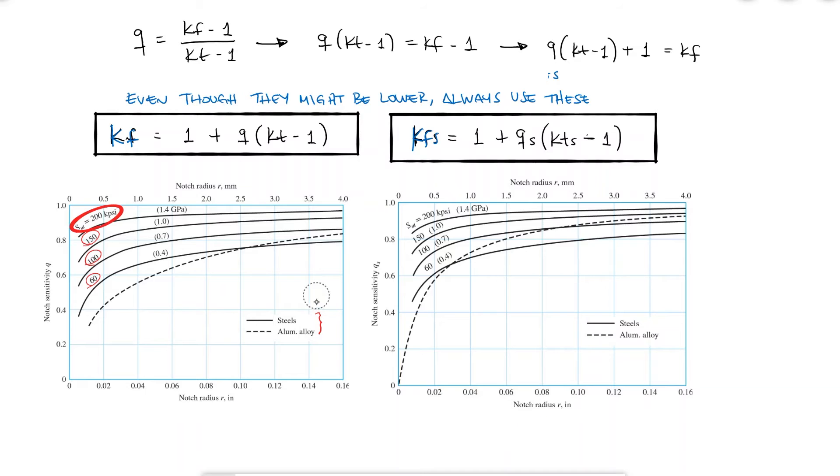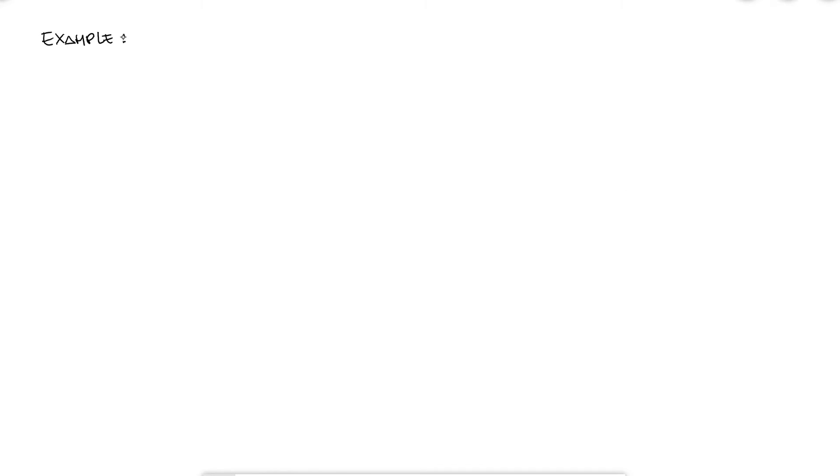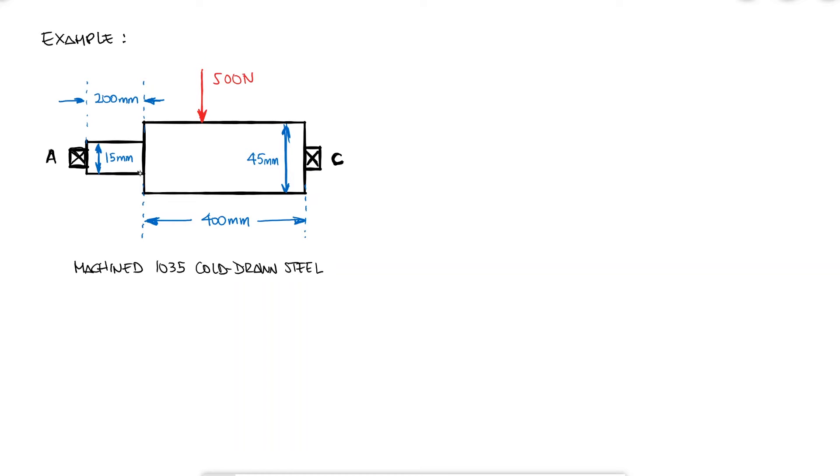Let's look at a problem where we put together what we've learned in the past three main videos. A rotating shaft simply supported in ball bearings at A and C is subjected to a non-rotating force F of 500 N right in the center between A and C. The shaft is machined from a 1035 cold drawn steel, and the radius of the notch is 9/8 millimeter. I want to estimate the life of the part. Remember that these problems have two very distinct parts that almost have nothing to do with each other: one, calculating the fatigue strength, and one, calculating the stress.